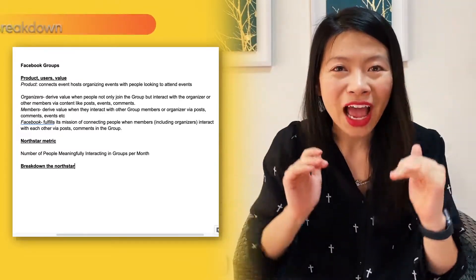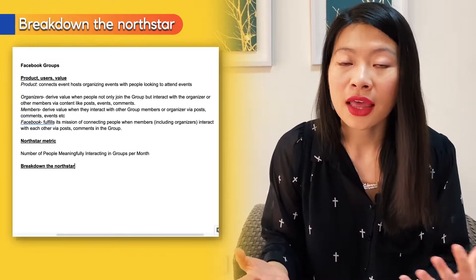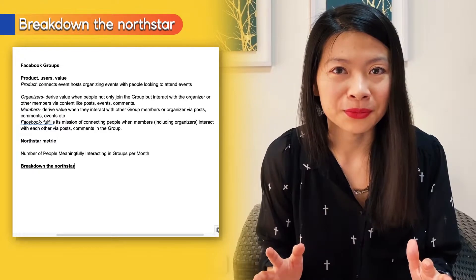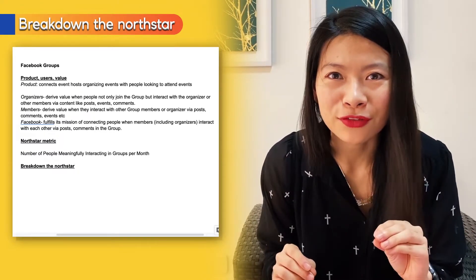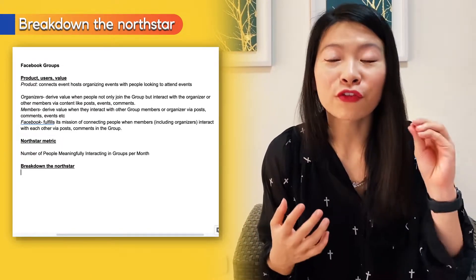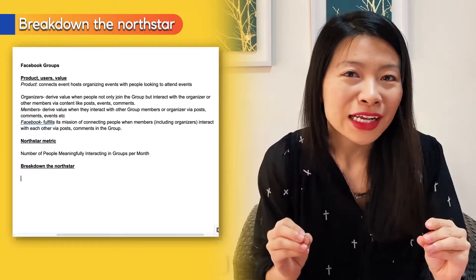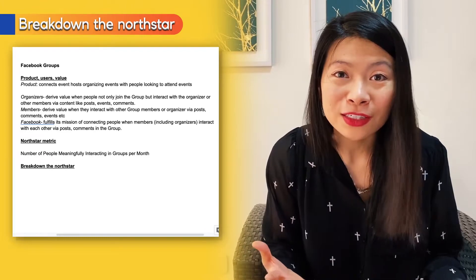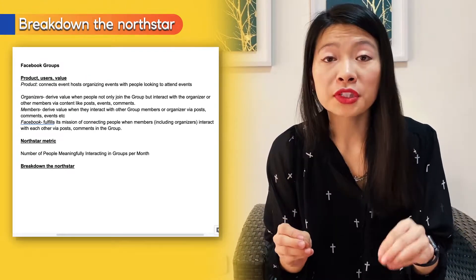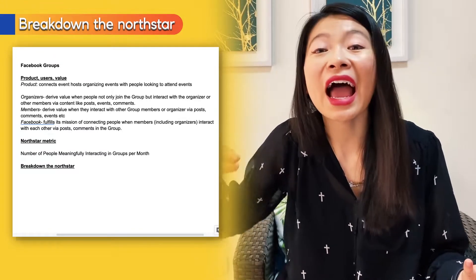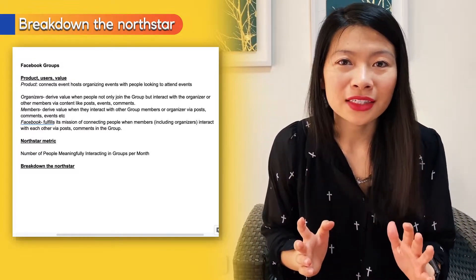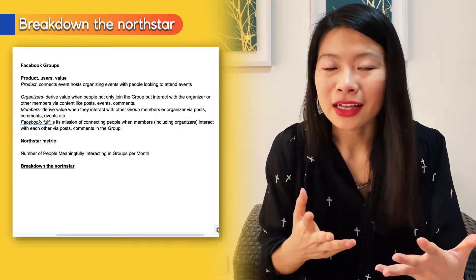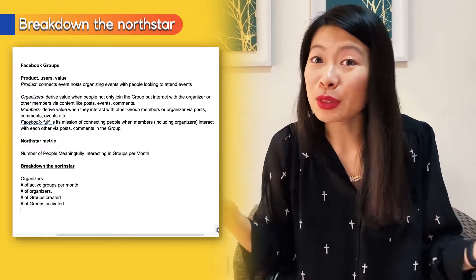For step three, let's break down this North Star to come up with health metrics that contribute to this top line. Think about funnels and growth levers. For a healthy Groups ecosystem, you need enough supply — a number of active groups available for people to join. Breaking that down: enough organizers creating groups, the number of groups created, and the number of groups that are actually activated. I might also want to segment the types of groups to ensure a healthy diversity representing people's interests.